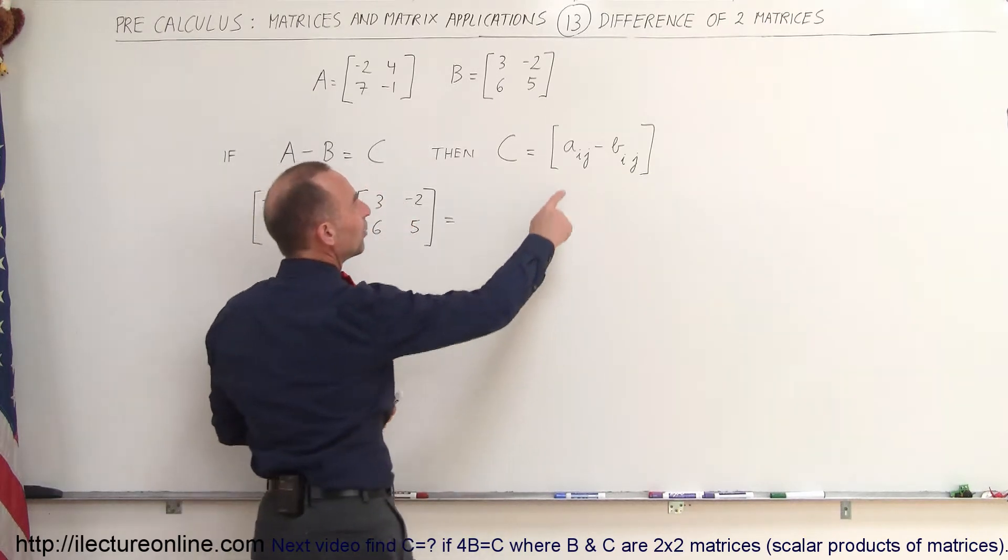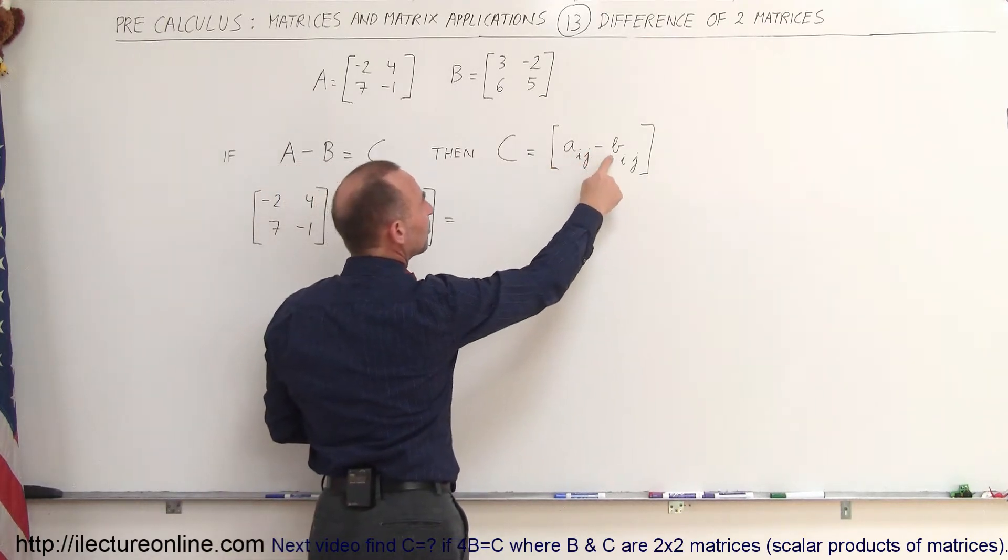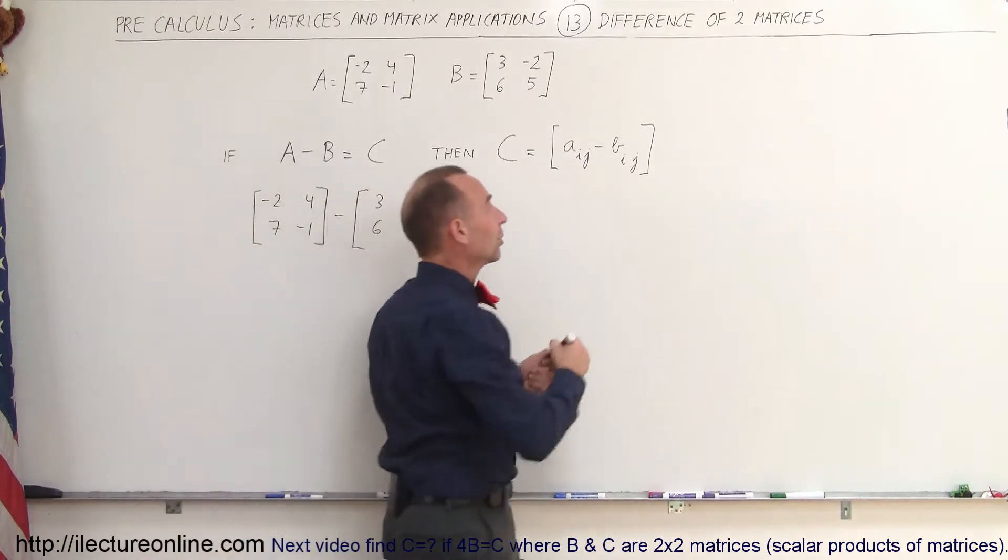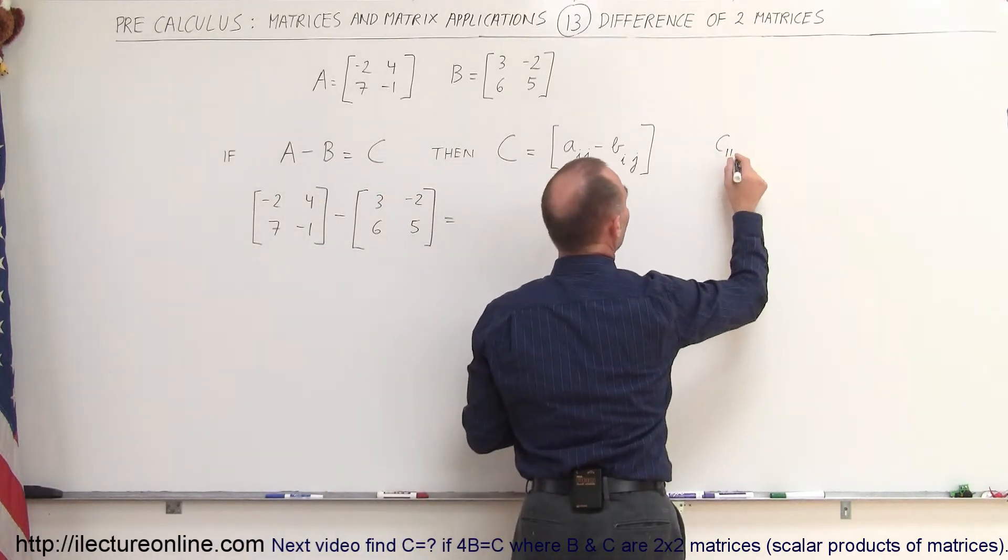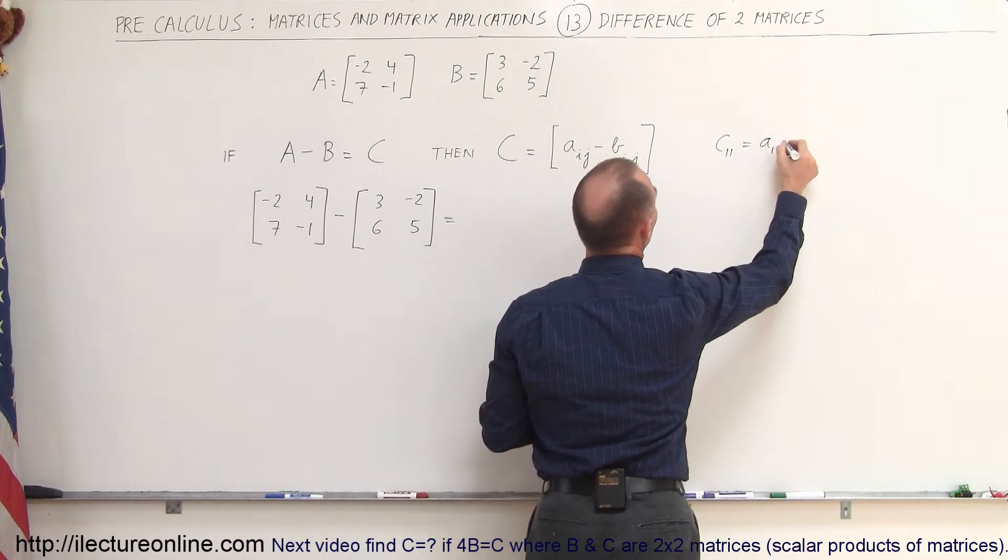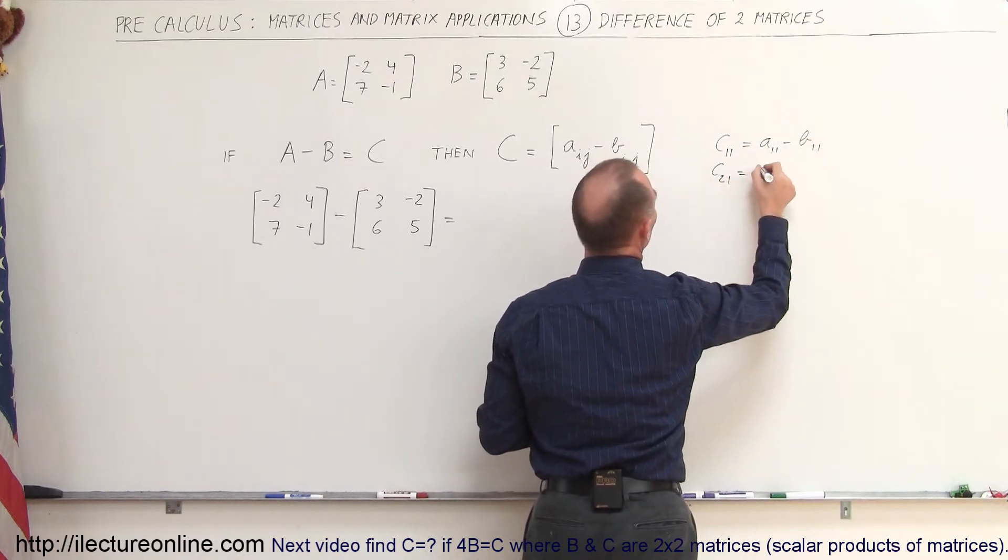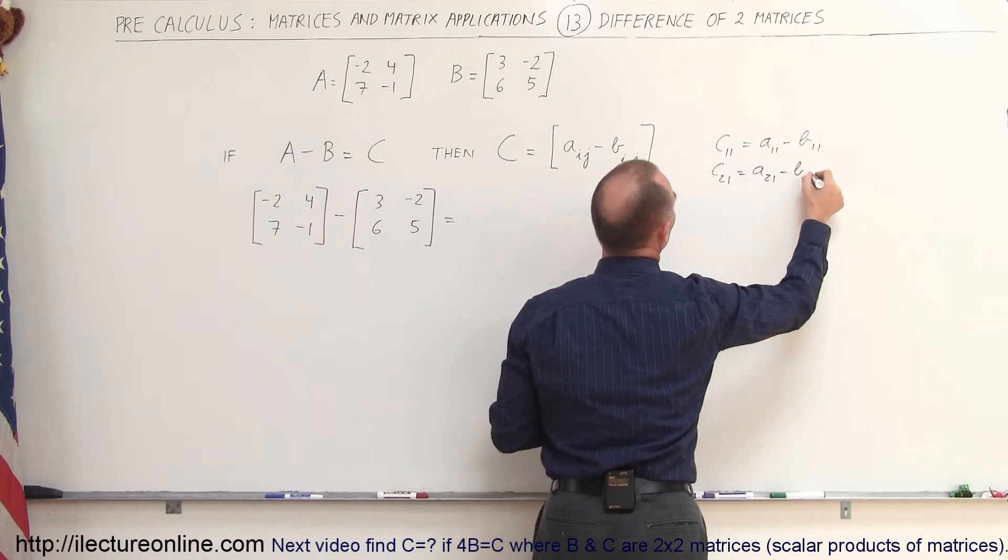For example, if we take element A11, we subtract element B11 from that and that will then become element C11. In other words, C11, that particular element will be equal to A11 minus B11 and element C21 will be equal to A21 minus B21 and so forth.